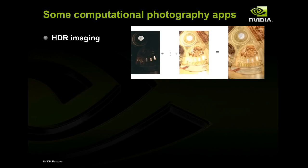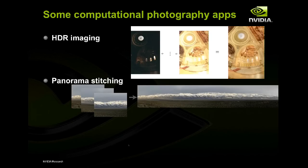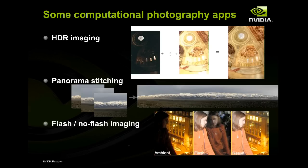Here are some applications that people have done with computational photography. One is high dynamic range imaging: in a church scene, you can't simultaneously capture the dark and the very bright parts in one image. So you take many images and merge them into a single image that shows all the details. Another example is extending the field of view — you take several small views and stitch them together into panoramas. Or if a person is sitting in front of a window, combining flash and no-flash images can give you better results.